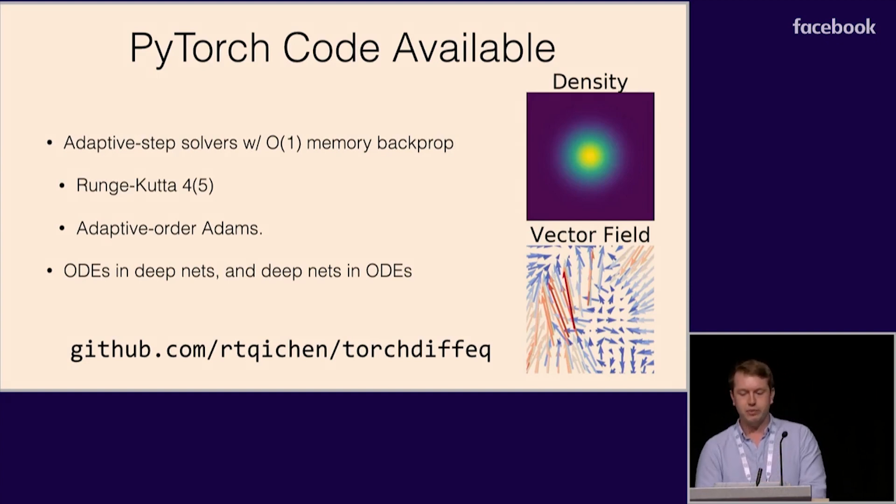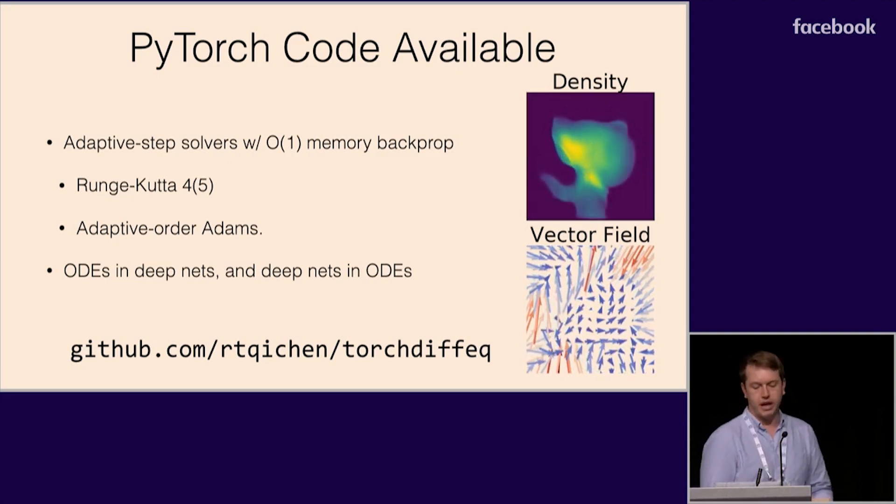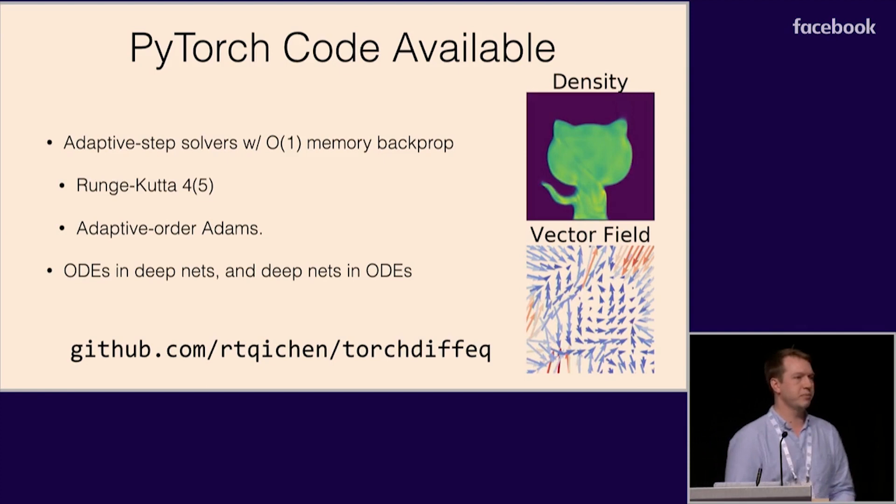We also released a set of differentiable adaptive step solvers that use the adjoint method to give numerically stable and constant memory derivatives. This includes Runge-Kutta and adaptive order implicit Adams, and you can mix and match these ODE solvers with any other differentiable model component.